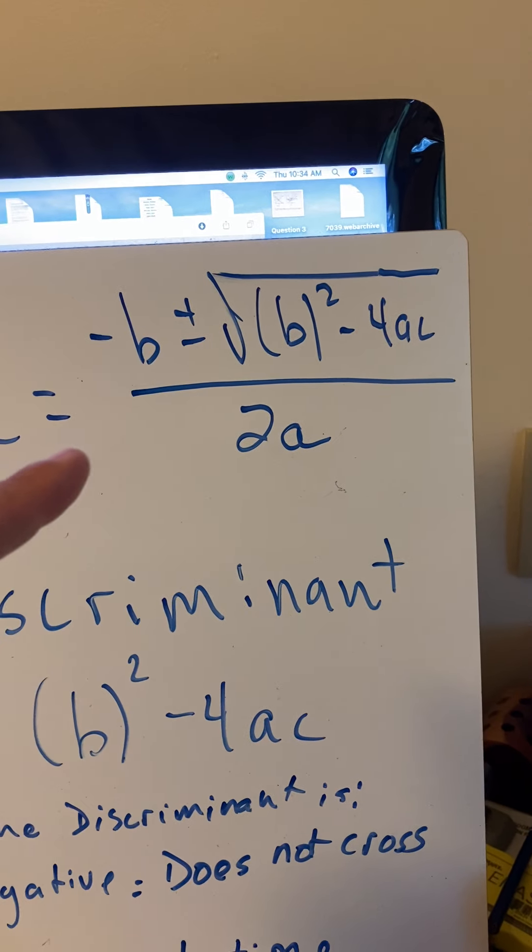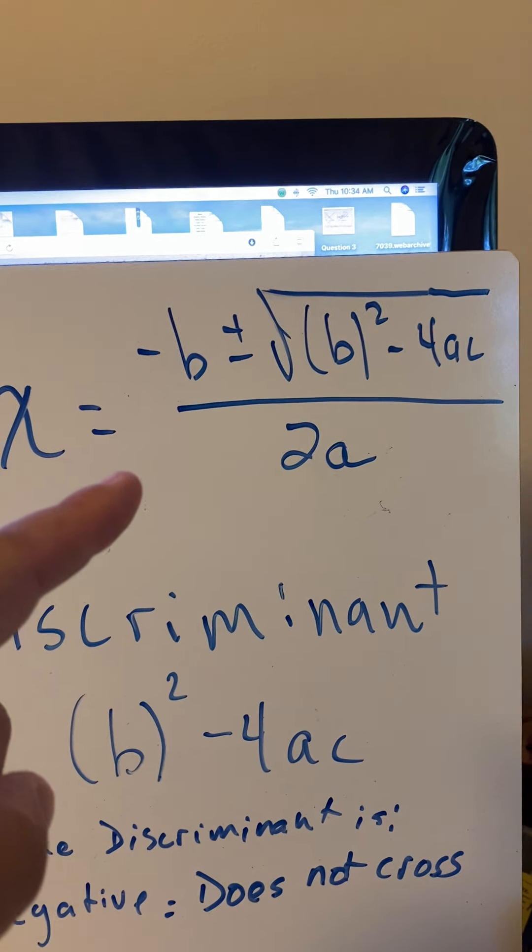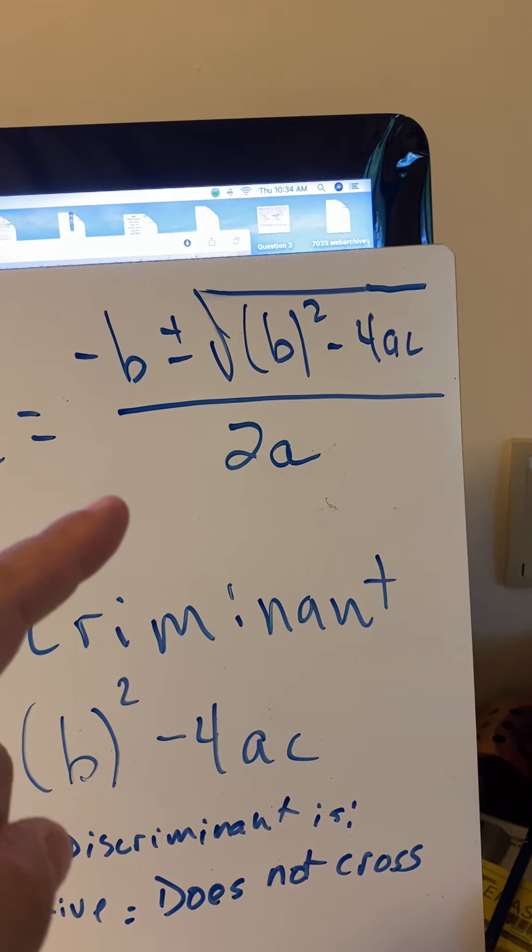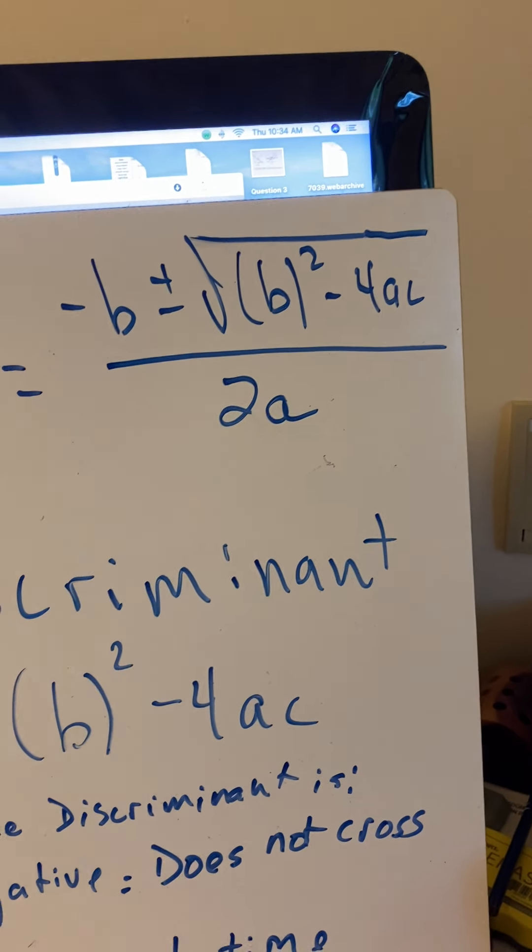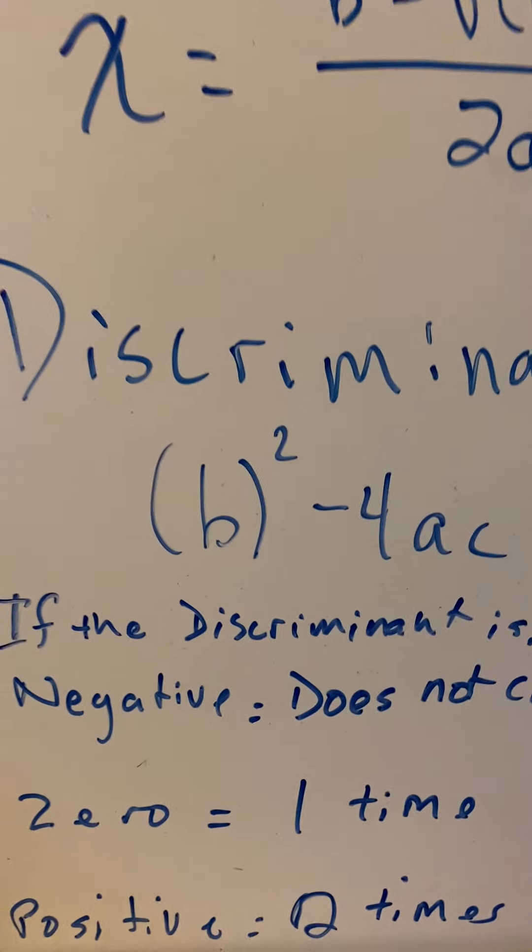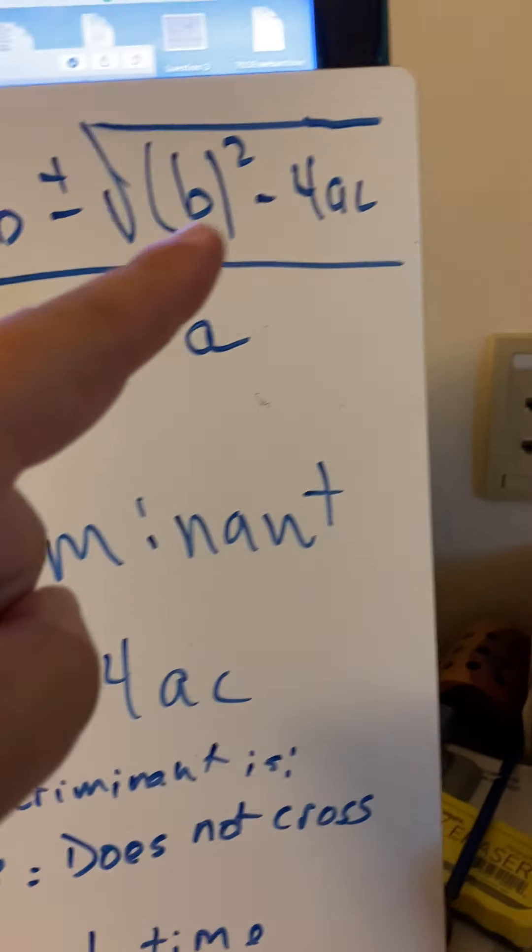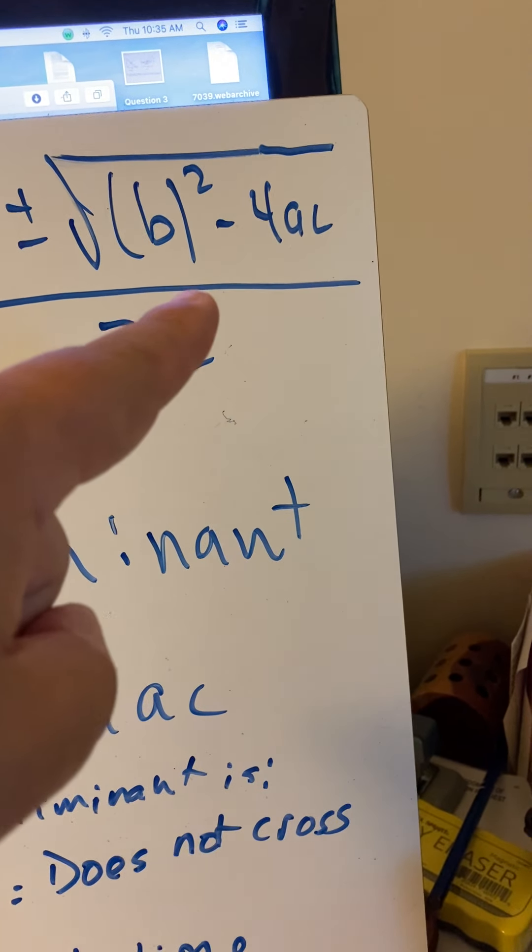We know this is the quadratic equation. X is equal to negative b plus or minus the square root of b squared minus 4ac all over 2a. The discriminant is the part that's underneath the radical, b squared minus 4ac.